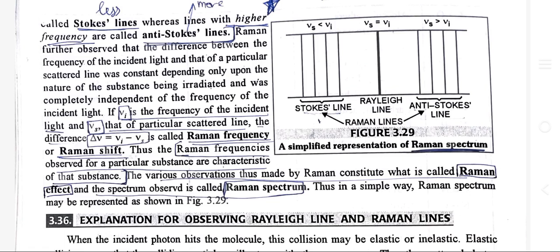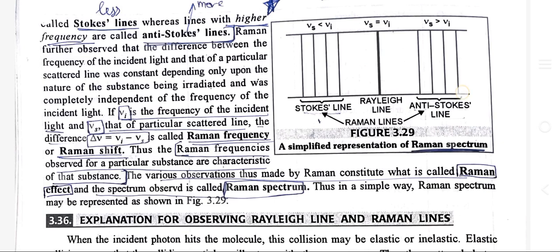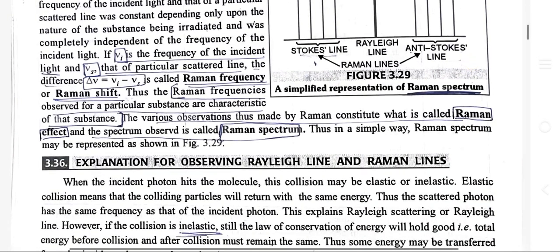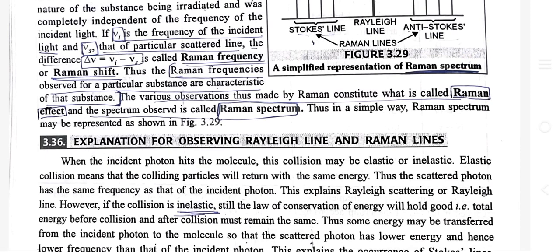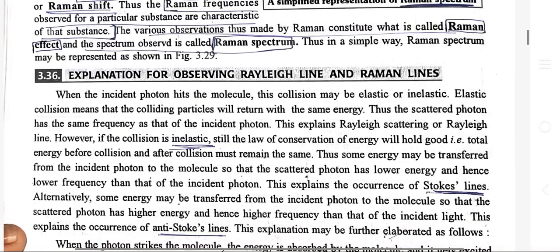If μᵢ is the frequency of the incident light and μₛ that of the particular scattered light, the difference Δμ = μᵢ − μₛ is called the Raman frequency or Raman shift. Thus the Raman frequencies observed for a particular substance are characteristic of the substance. The various observations thus made by Raman constitute what is called Raman spectroscopy, and the spectrum observed is called the Raman spectrum.